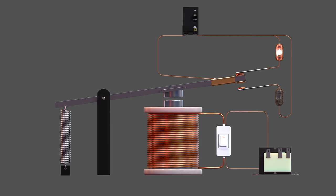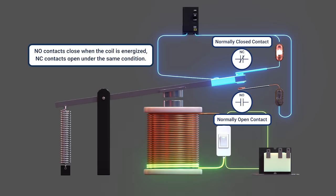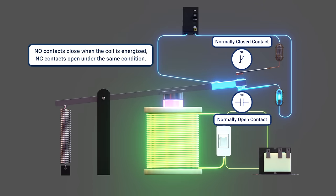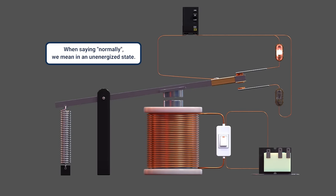There are normally open, or NO, and normally closed, or NC, contacts in many relays. Normally open contacts close when the coil is energized, while normally closed contacts open under the same condition. So when we say normally open or normally closed, we're saying normally is in the unenergized state.